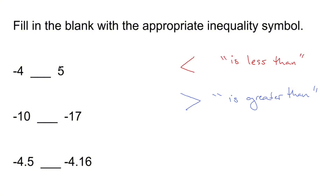Negative four is going to be less than five, so we're going to put the 'is less than' symbol there. Negative 10 is greater than negative 17. You might be thinking, whoa — 10 is smaller than 17, and it sure is, but negative 10 is a larger number than negative 17. Remember: the larger the negative, the smaller the number.